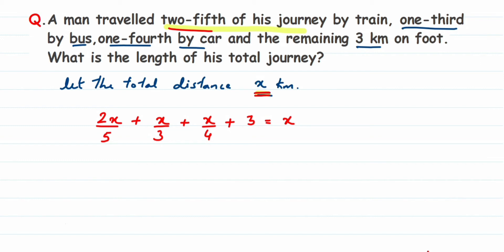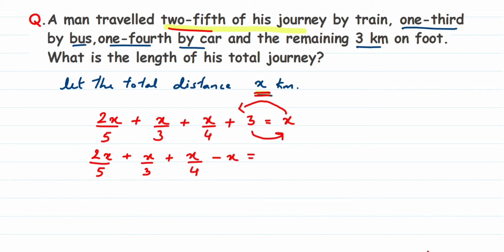To solve a linear equation, we bring all variables to one side and constants to the other. Transposing x to the left and 3 to the right gives us: 2x/5 + x/3 + x/4 − x = 3. I'll write x as x/1.